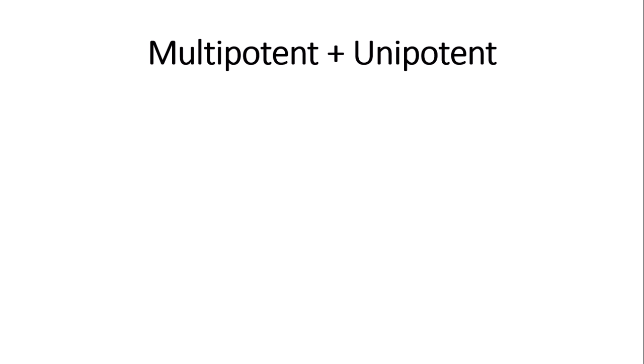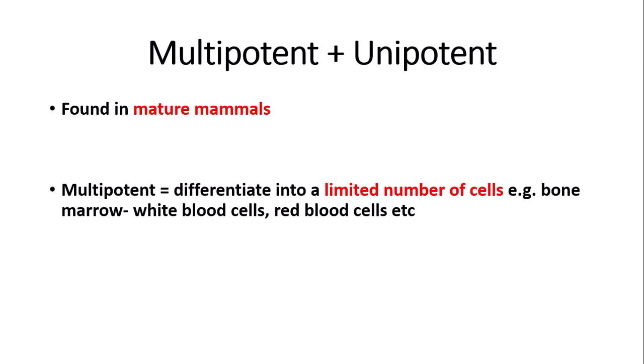Now let's move on to multipotent and unipotent stem cells. Both types are found in mature mammals, not in embryos, so they are not embryonic stem cells. Multipotent stem cells differentiate into a limited number of cell types. Bone marrow is an example — it can differentiate into only types of blood cells such as white blood cells and red blood cells, so there is a limited number of cell types it can produce.